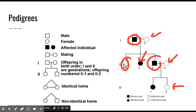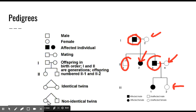Offspring are shown in order of age: individual one is the oldest, two is the middle child, and three is the youngest. So this couple had one male, then a female, then another male. The youngest male has also had a mating relationship with female number four and they've had two female offspring. If lines come from the same point on the offspring line and are joined by a line between them, we have identical twins. If the two lines look like cherry stalks with no joining line in the middle, we have non-identical twins — and obviously you can't have identical twins if one is male and one is female.